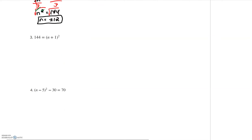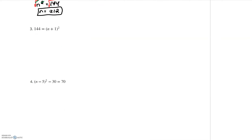My next equation looks a little bit different — we haven't really done one like this, so let's pay special attention. This is where the 'break it up if necessary' step will come in. I'm going to flip sides so that the quantity (n + 1) squared is on the left and 144 is on the right. I do have something squared by itself equal to a number, so I can take the square root to get rid of the squared. On the left I'm left with n plus 1, and on the right I have — remember from the last one — both positive and negative 12.